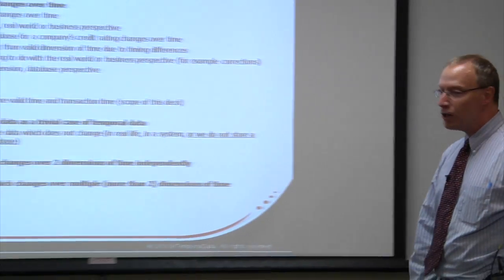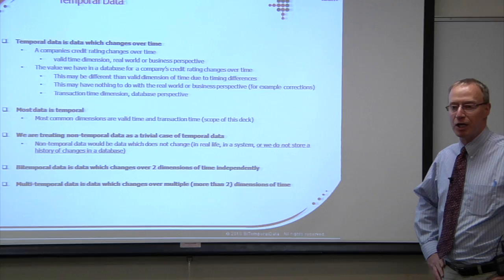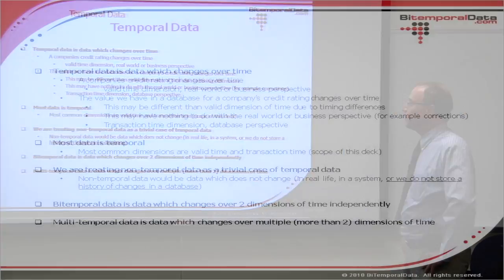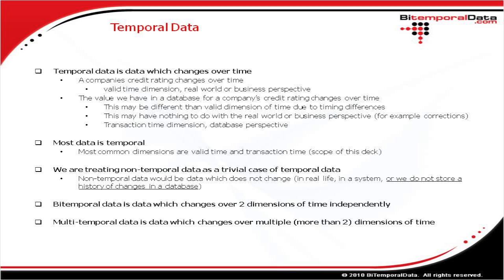So first, temporal data. What is temporal data? A nice simple definition is that temporal data is data that changes over time. For example, a company's credit rating changes over time — a credit rating of A in the first quarter, B in the second quarter, C in the third quarter, et cetera. Data which changes over time in that fashion we refer to as changing over the valid dimension of time, or from the real world or business perspective.